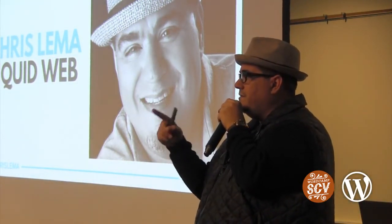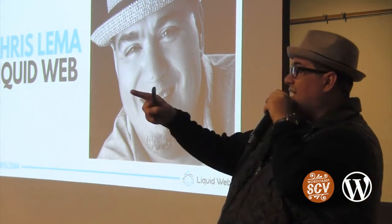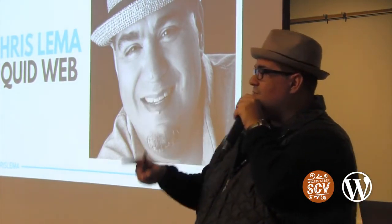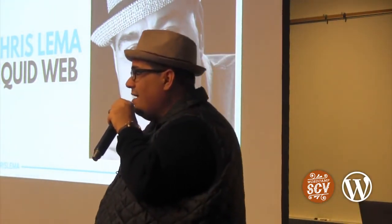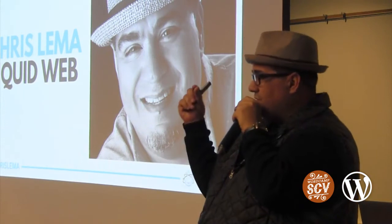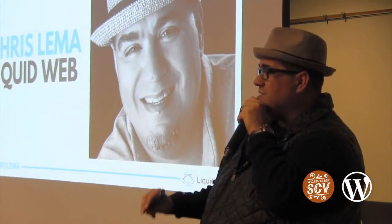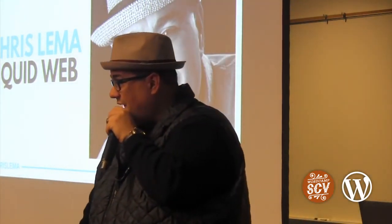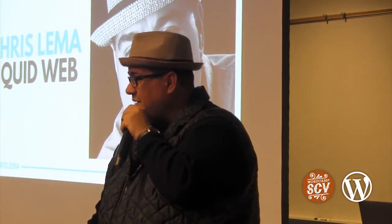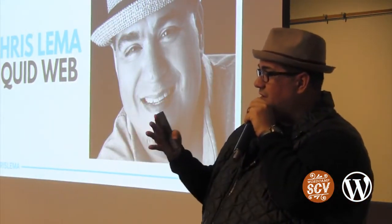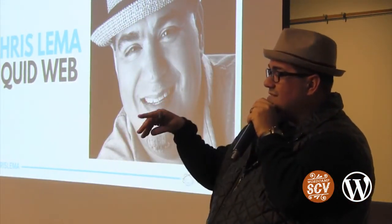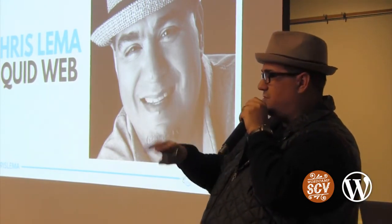Question about a device someone noticed: it's a Liquid Web accessory that attaches to the back of a cell phone, functioning as both a stand to prop your phone up and a ring you can put your finger through to hold it. It's shaped like a teardrop, which is the Liquid Web logo — fancy all at once.